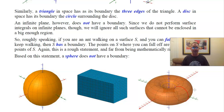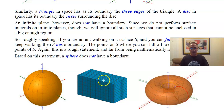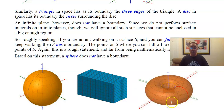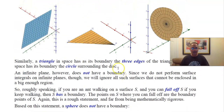Even though a cube or box has edges, those are not boundaries. One way to think about it is: if you are an ant walking on a sphere, box, or torus, you're not going to fall off if you keep walking — assuming you can walk upside down, which ants can do. But if you were an ant on this triangle and kept walking, you would fall off the triangle.